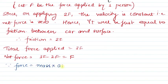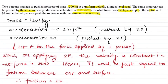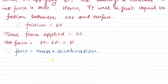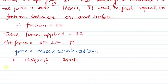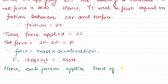So net force equals f. We know that force equals mass into acceleration. Acceleration is already known, mass is already known — 1200 kg, acceleration 0.2 m/s². So f = 1200 × 0.2, which simplifies to 240 Newtons. Hence each person applies 240 Newtons of force on the motor car.